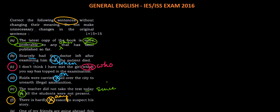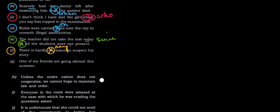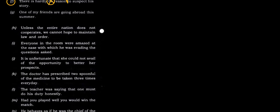Next one: It says one of my friends are going abroad this summer. One of my friends, so there is only one person going. It cannot be are. It will be is. One of my friends is going abroad this summer.